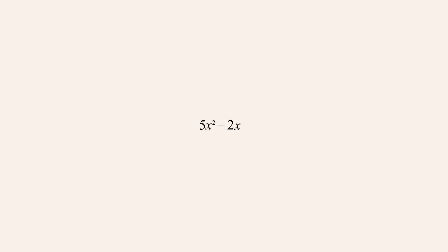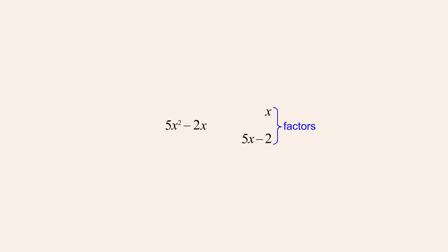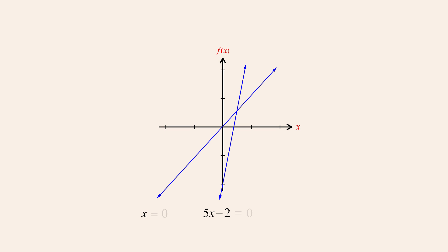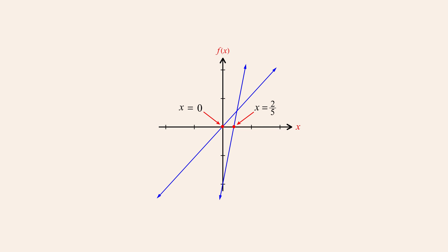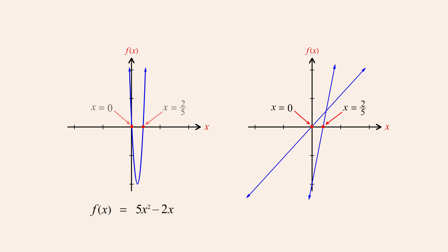For example, to factor the quadratic expression 5x-squared minus 2x, we can immediately see that x is one of the linear factors. The remaining factor is thus the linear expression 5x minus 2. Both of these factors are linear functions of x. So by setting these functions equal to zero and solving for x, we can easily determine that the zeros of these linear functions are zero and two-fifths.